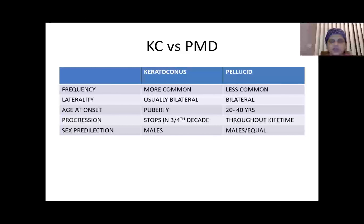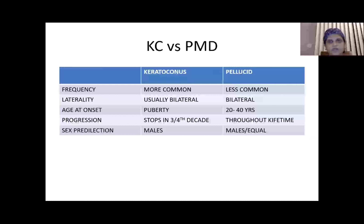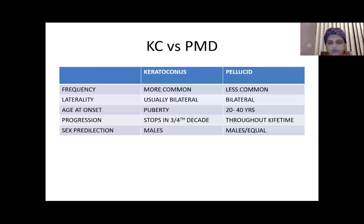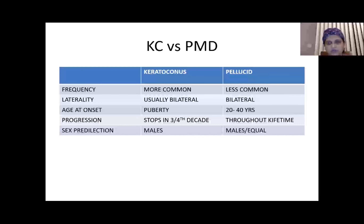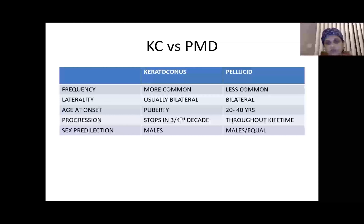97% of ectatic disorders constitute keratoconus, whereas only 3% constitute pellucid. Both are usually bilateral, but pellucid can present as unilateral, and keratoconus and pellucid can each be present in one eye. Age at onset is usually puberty for keratoconus, stopping progression in the 3rd or 4th decade, whereas pellucid presents late in the 2nd–4th decade and typically keeps progressing throughout lifetime. Both conditions are more common in males.